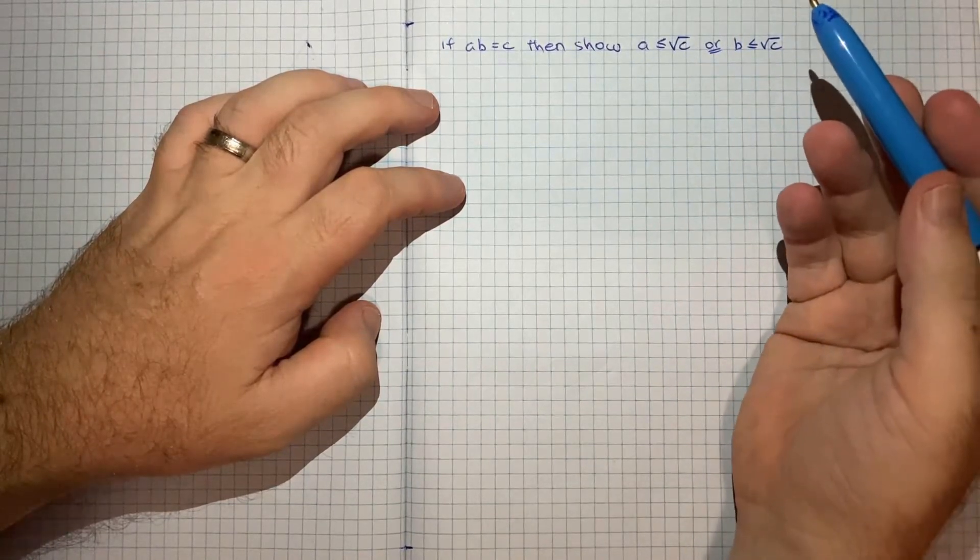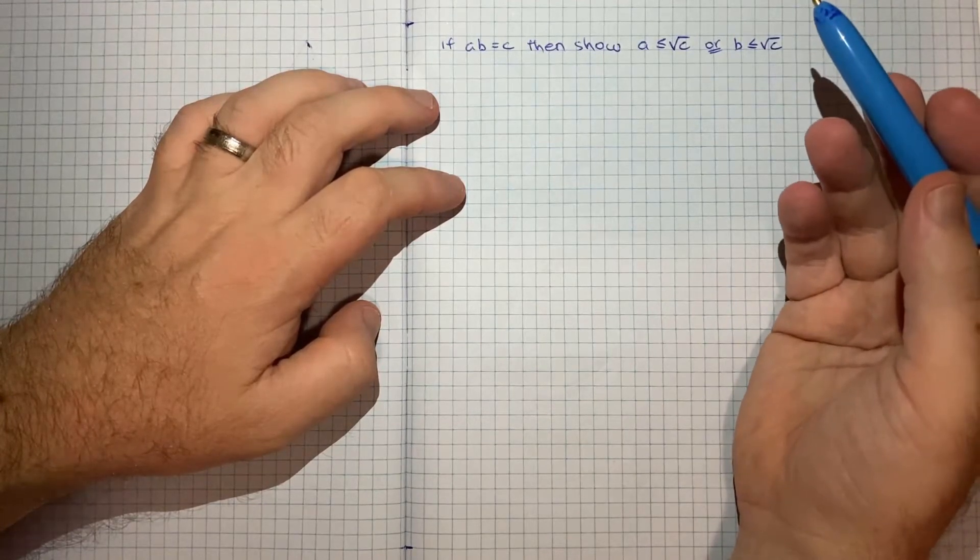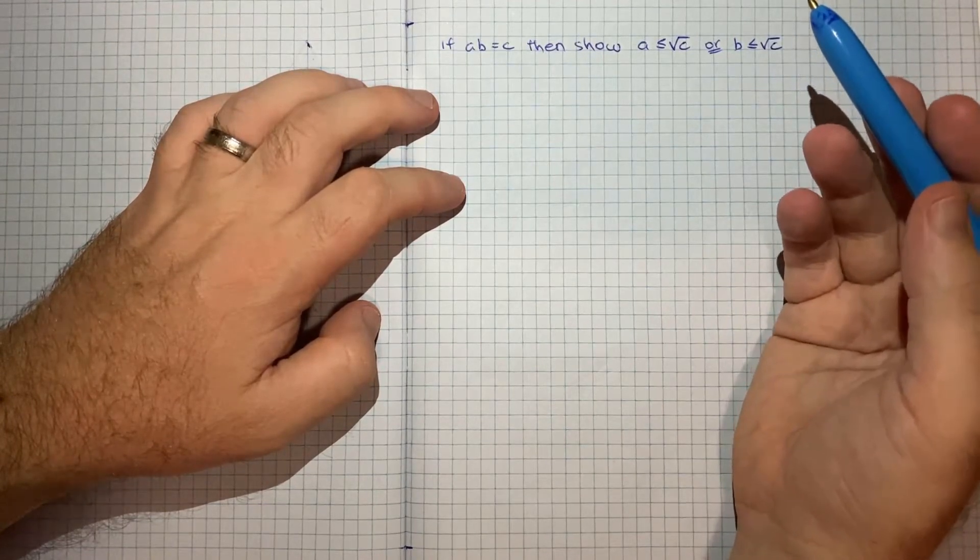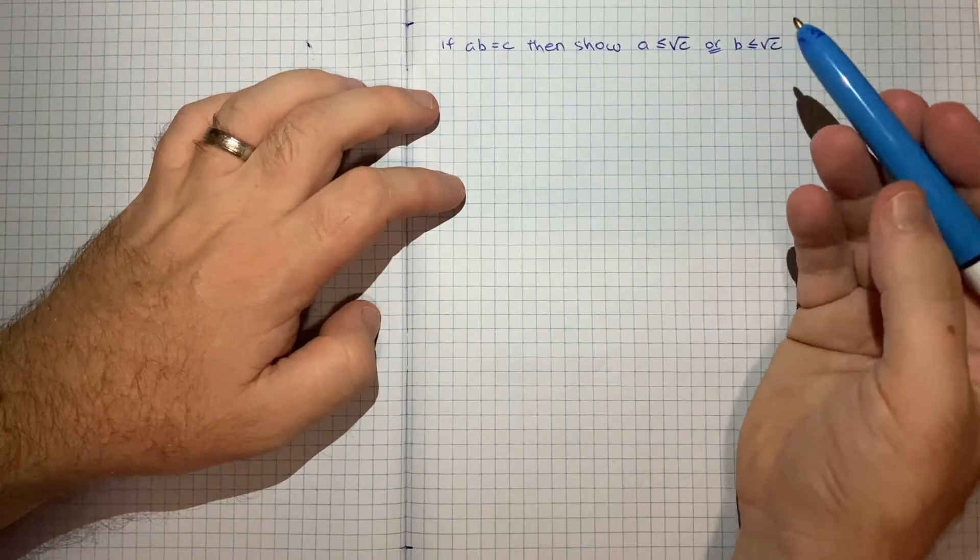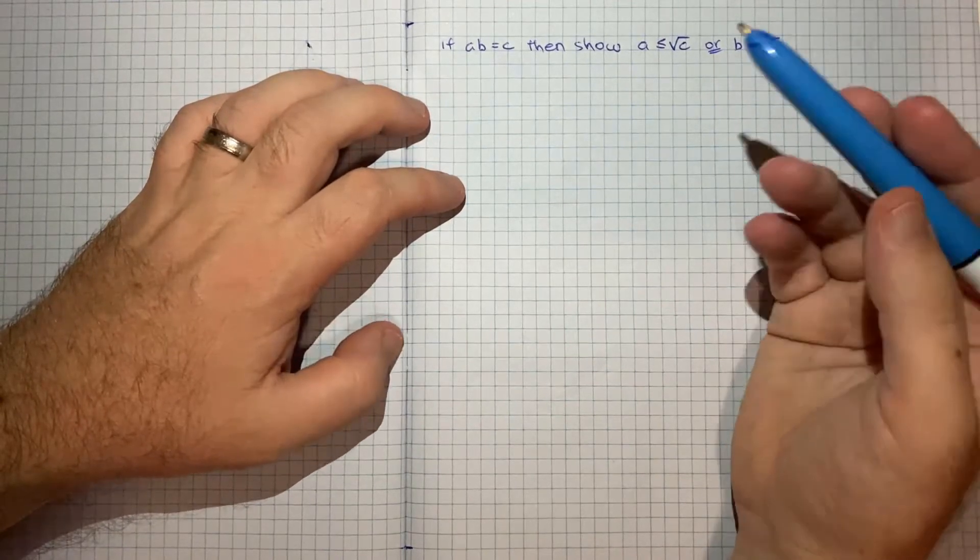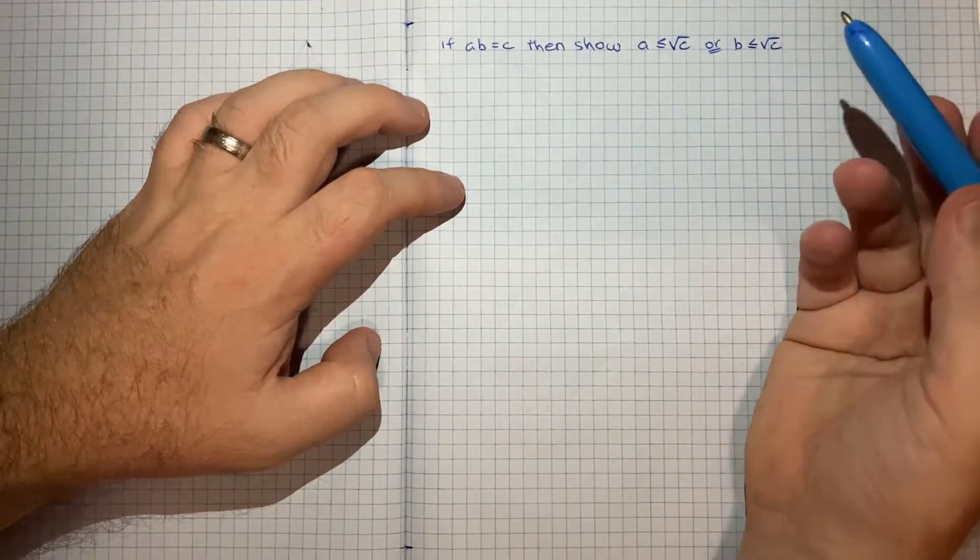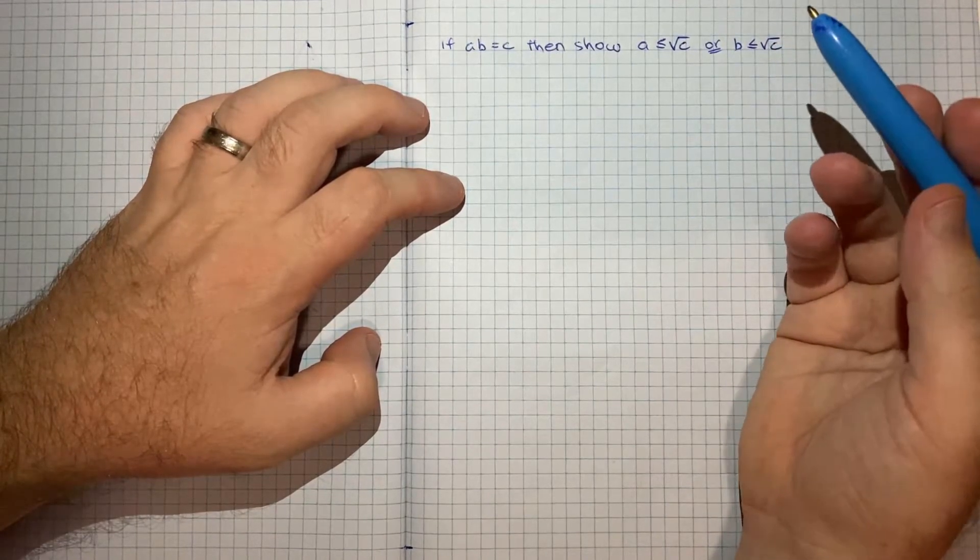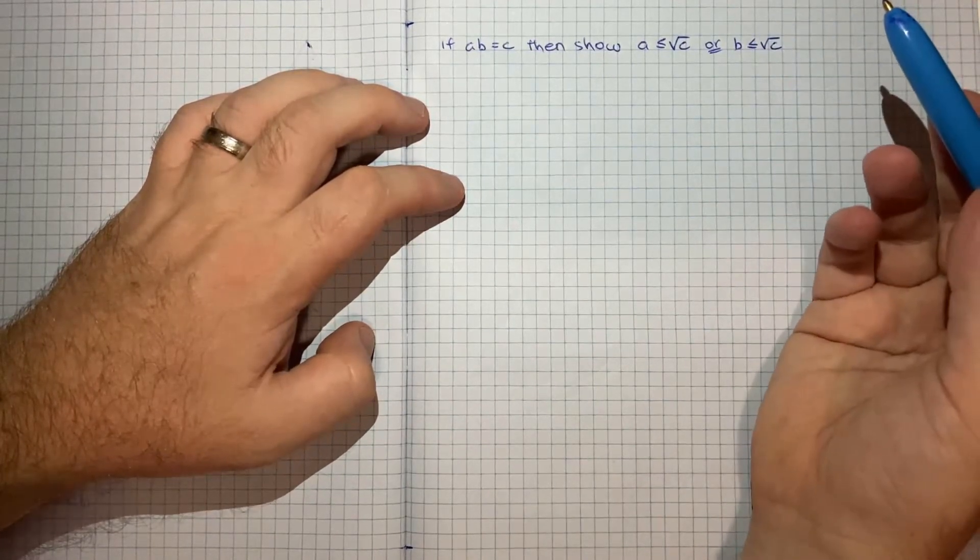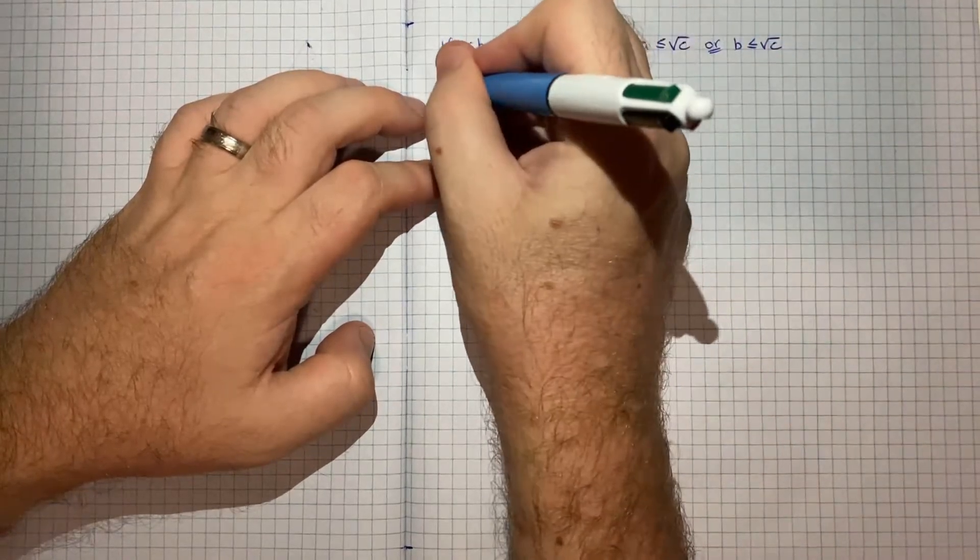And sometimes proofs like this, it is a little bit of trial and error. It's not always obvious from the outset what technique to use. So often you just need to try different things and then hope that eventually one of the techniques in your toolkit gets you to where you need to be. So in this case I'm going to use contradiction.